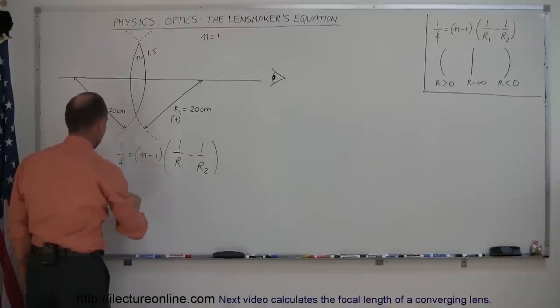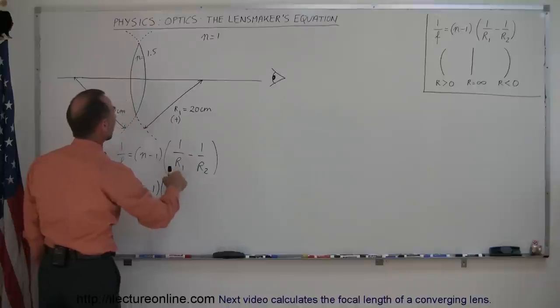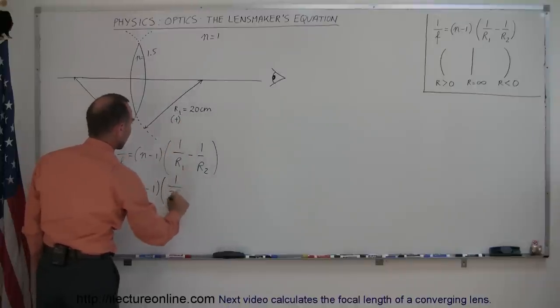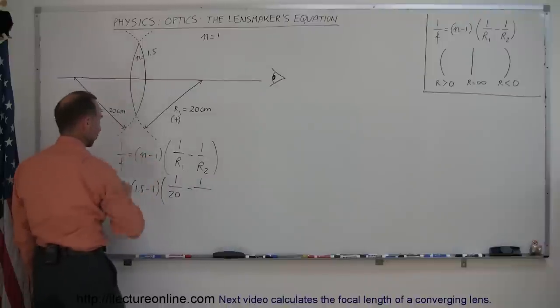We get 1 over F is equal to 1.5 minus 1 times 1 over R1. R1 is a positive 20 centimeters minus 1 over R2, and R2 is a negative 20 centimeters.